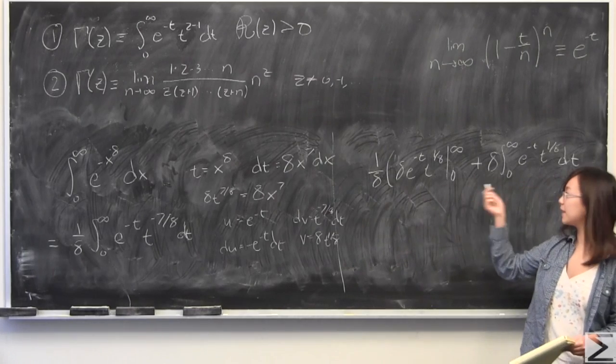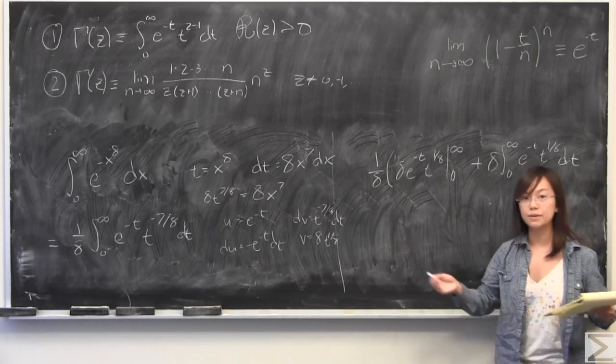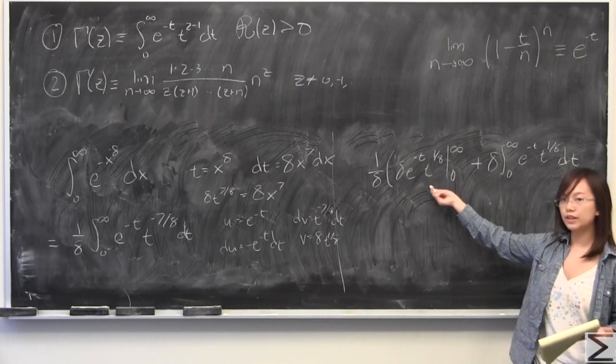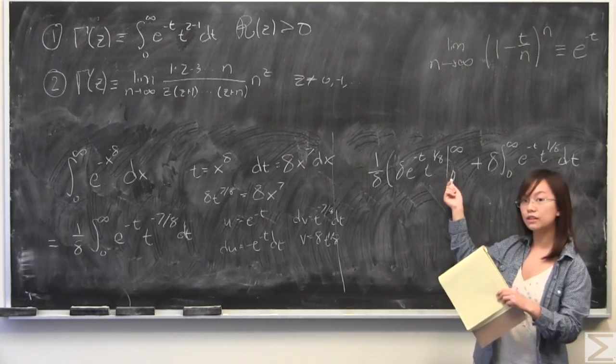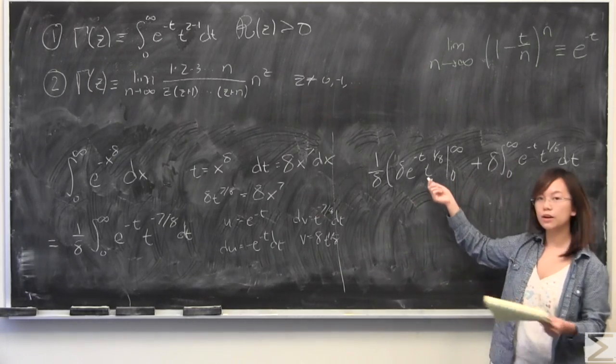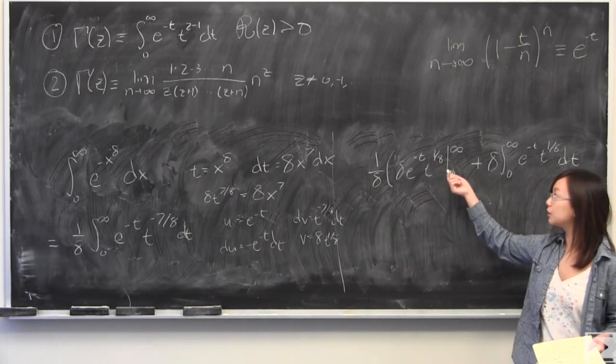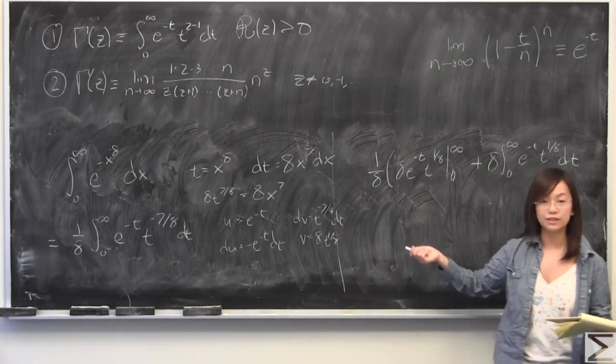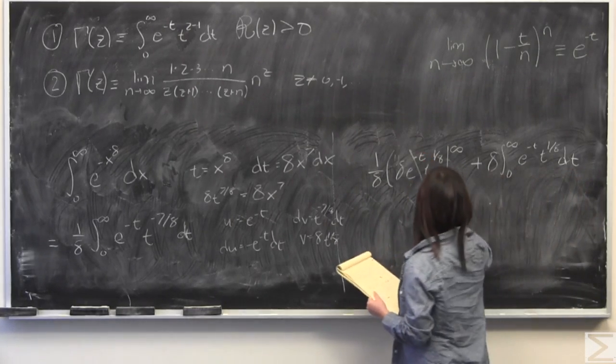So, here I have plugged it back in, and I also rewrote that over there for you. And from here, you can see that this is going to equal 0. This is because when t is equal to 0, t to the power of 1 eighths has to be 0. And when t is equal to infinity, this term, e to the power of negative t, that is also going to equal 0. This term just vanishes.